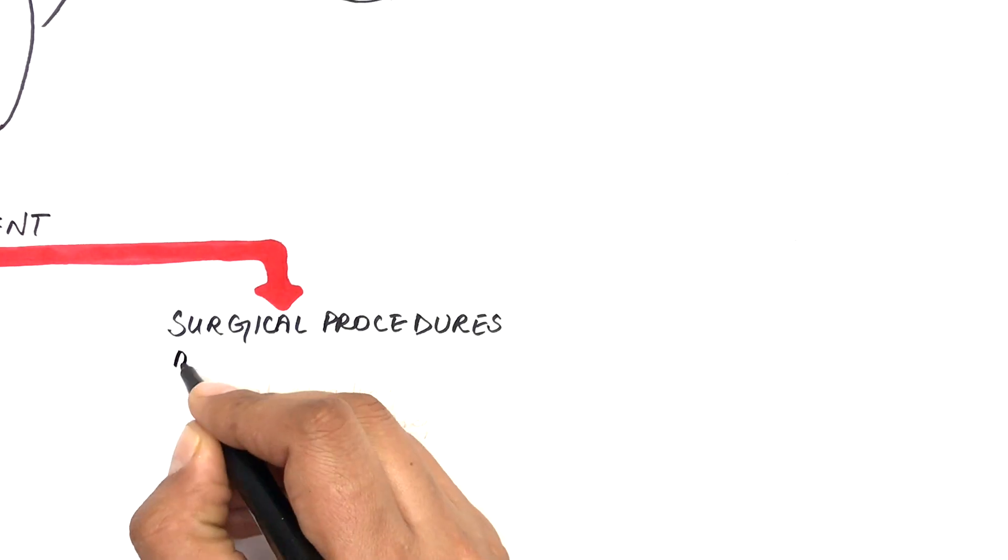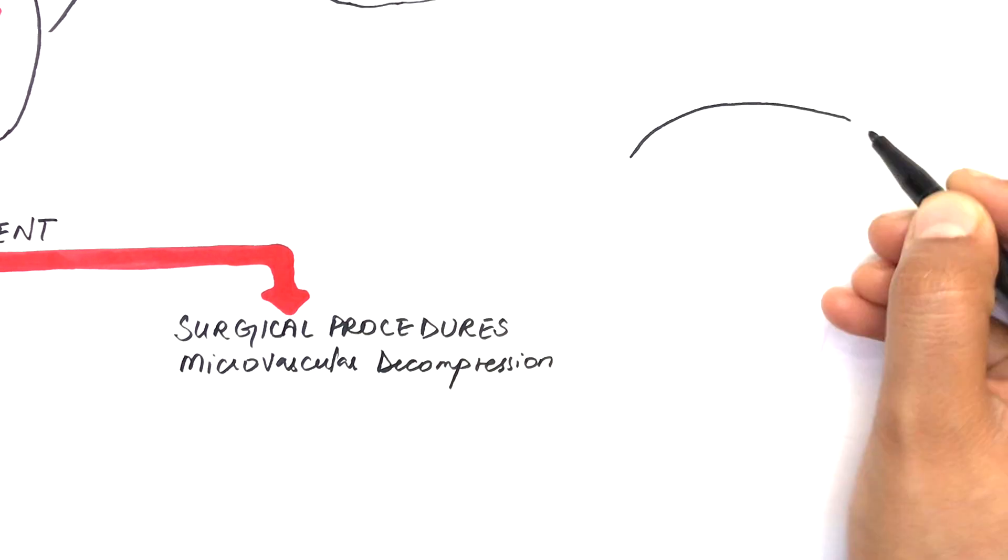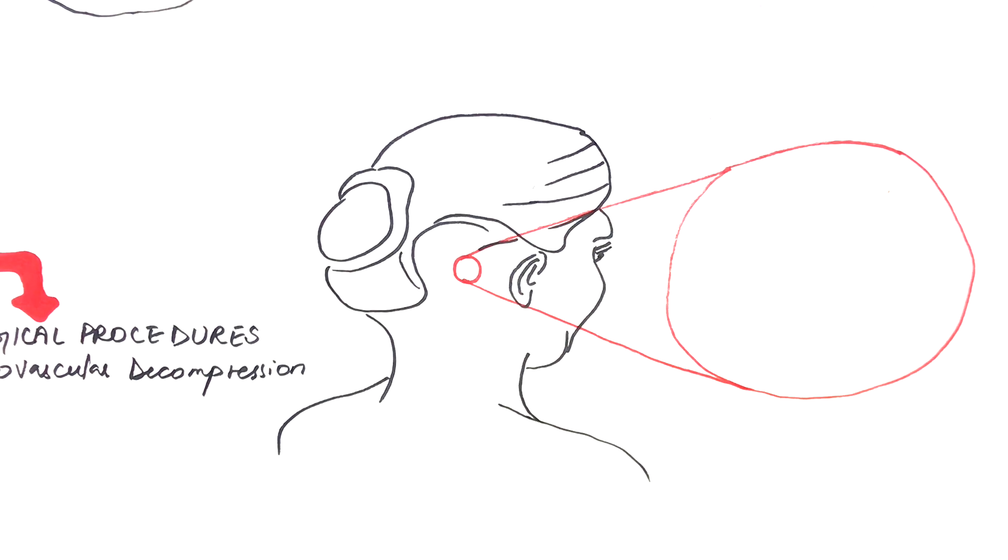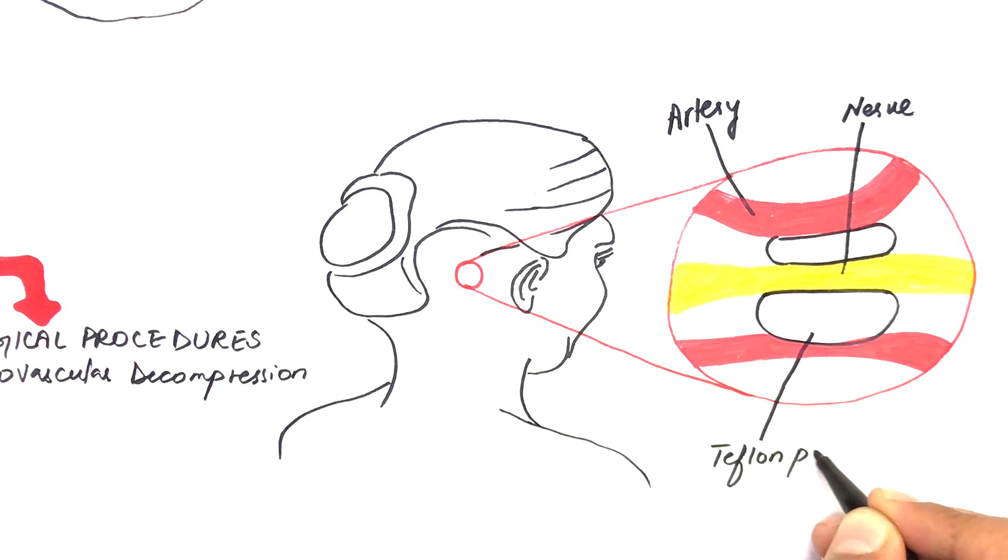Like microvascular decompression surgery. This surgery relieves abnormal compression of a cranial nerve by placing a Teflon pad in between the nerve and the artery. It's an invasive but non-destructive technique that is used to treat most cases of classical trigeminal neuralgia.